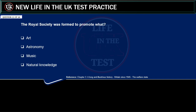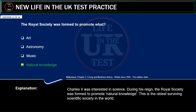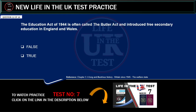The Royal Society was formed to promote what? Art. Astronomy. Music. Natural knowledge. Correct answer: natural knowledge. Explanation: Charles II was interested in science. During his reign, the Royal Society was formed to promote natural knowledge. This is the oldest surviving scientific society in the world.